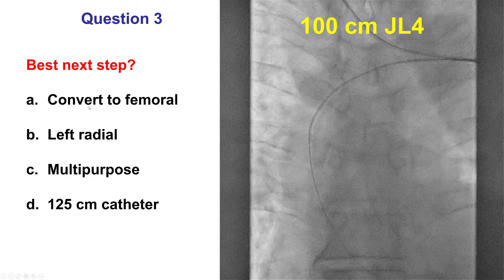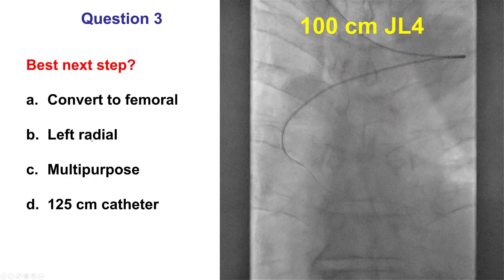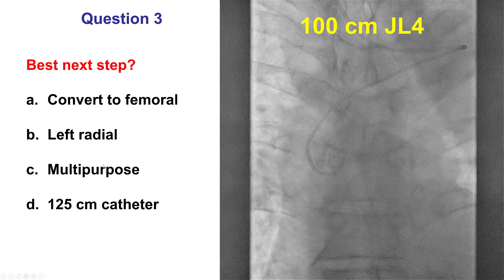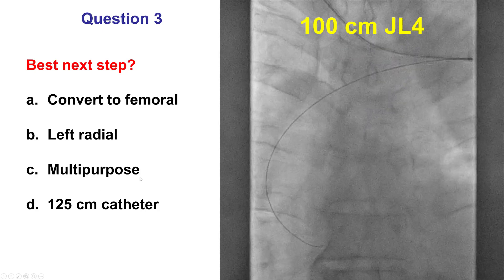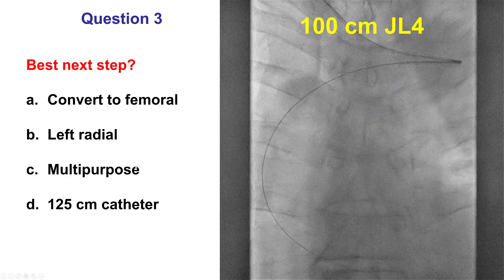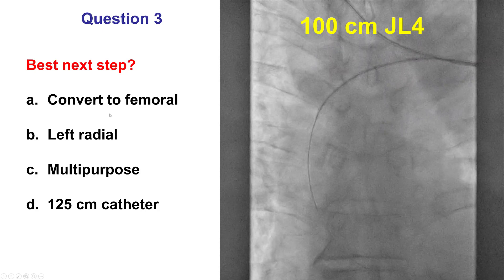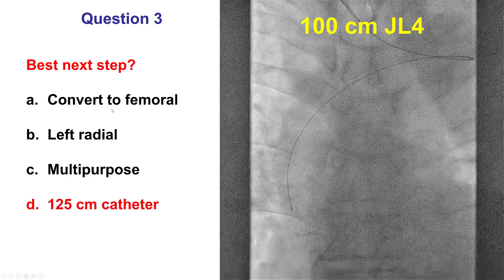A, convert to femoral axis. B, use left radial. C, multipurpose. Or D, use a 125 cm catheter. One could argue that any of those could potentially work.